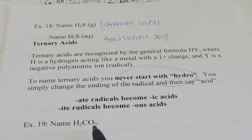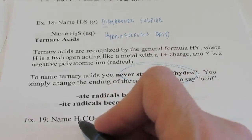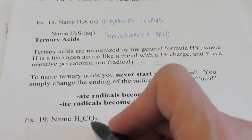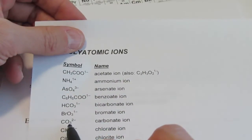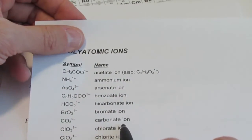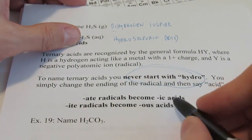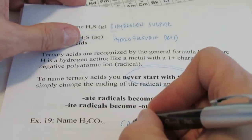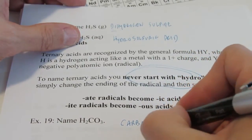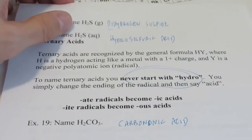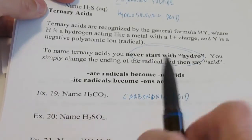H₂CO₃ — do you recognize that as a ternary acid or oxyacid? It starts with hydrogen and it's attached to a polyatomic ion. The name of that polyatomic ion CO₃²⁻ is carbonate. The way we name these is that -ate radicals become -ic acids. So instead of carbonate acid, I would call it carbonic acid. H₂CO₃ is appropriately called carbonic acid.